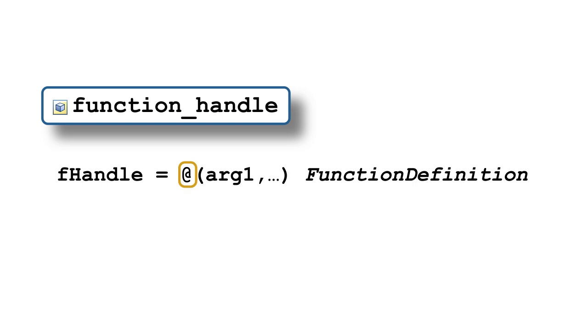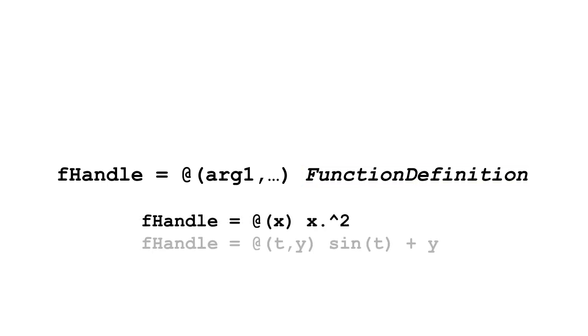The at symbol signals the definition of a function handle. We then provide the list of input arguments enclosed in parentheses, followed by the function definition. Any valid MATLAB expression may be included in the function definition as long as it is done within one line of code.